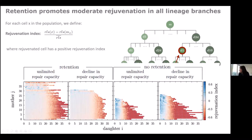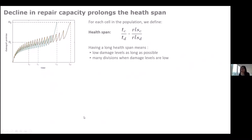Plotting rejuvenation: red indicates negative rejuvenation, light blue indicates positive. Even though the non-retention case with declining repair looks like it rejuvenates more, the negative rejuvenation spreads much earlier and more widely across cells. In contrast, with retention and declining repair capacity, very few cells exhibit negative rejuvenation. The argument is that it's better for the majority of cells to be slightly better off than to have a small pool doing extremely well while the rest do poorly.